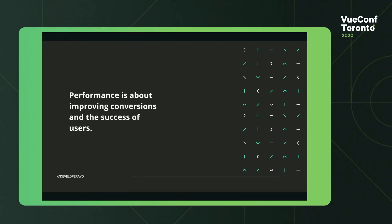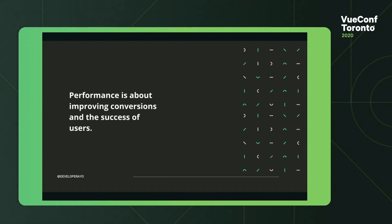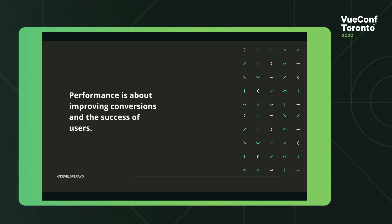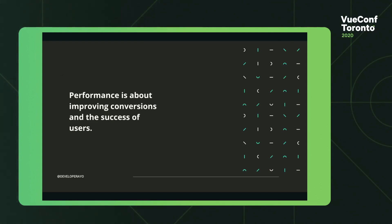Performance is about improving conversations and the success of users. Nothing is more important than the success of the users of your platform. Performance makes them more successful because they can achieve more in less time — you are delivering what they want super fast, and that's thanks to Vue.js. A whole bunch of products today don't care about speed, but front-end technologies like Vue.js are really changing almost everything about speed and how we deliver content to users.